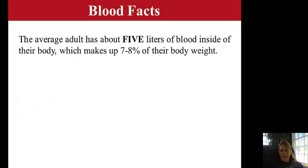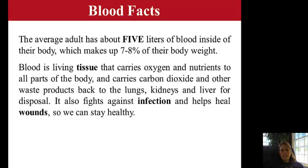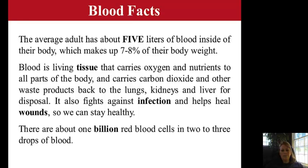Here's a few blood facts. An adult human body has approximately five liters of blood, and sometimes if you watch the CSI shows, they will talk about how much blood was lost, and if they're continuing to lose a lot of blood, they can find the victim within a proximity of so many yards or miles from the site. Blood is a living tissue — it is classified as a tissue because it carries oxygen and nutrients to different parts of the body. And in two to three drops of blood, there are one billion red blood cells.